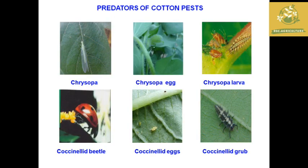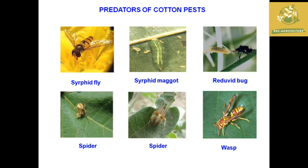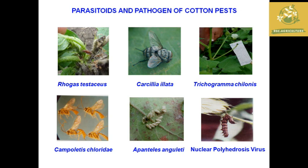Some predators of cotton pests include Chrysopa, which is a major predator. Other predators include syrphid fly maggots, wasps, Ragus, Distacus, Campovolus, Cloridus, Apanteles, Ungletus, and Nuclear Polyhedrosis Virus.